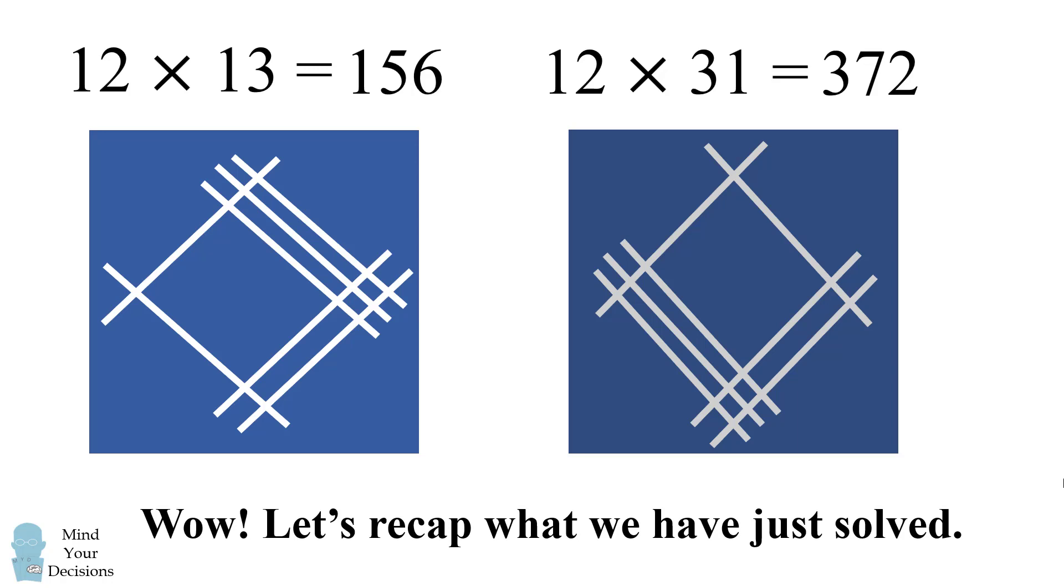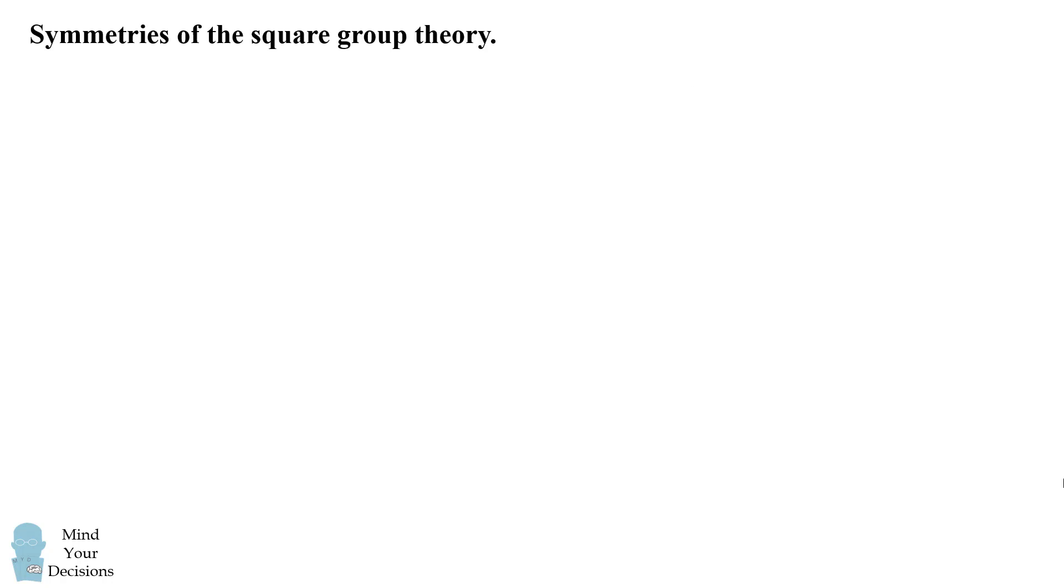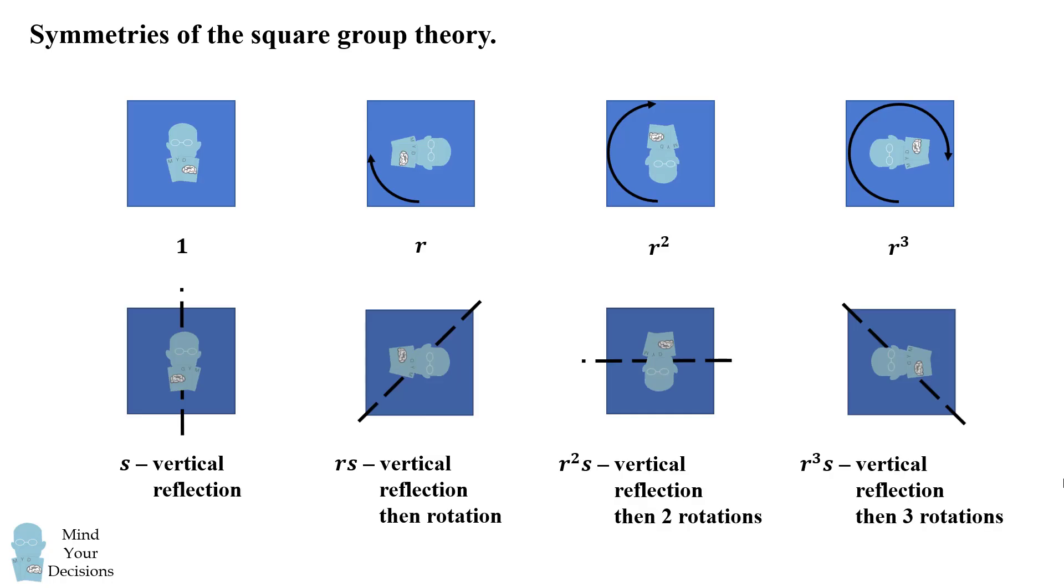So let's recap what we've just solved. We start out with the symmetries of a square using group theory and we apply these to multiply by lines group theory.